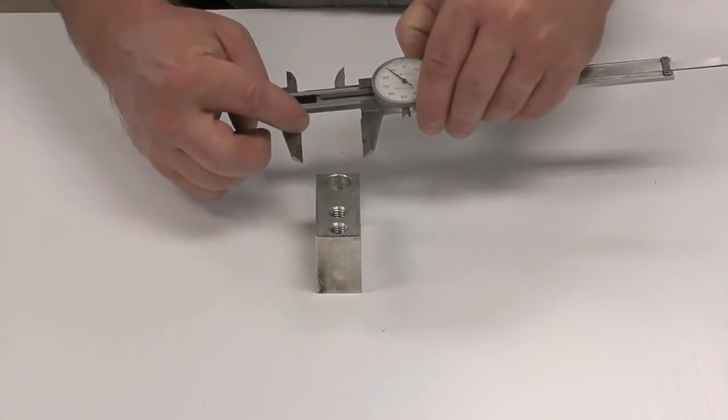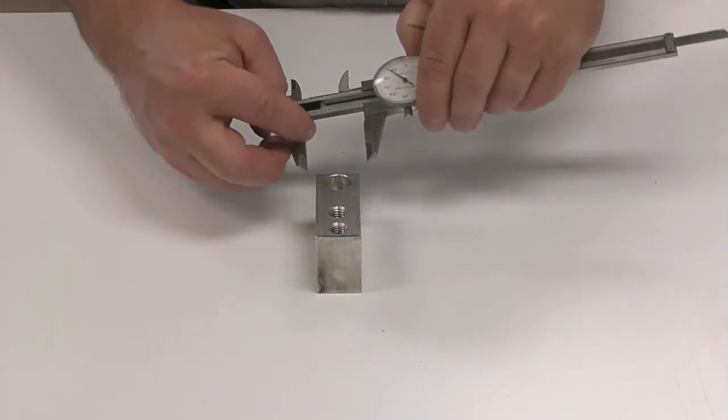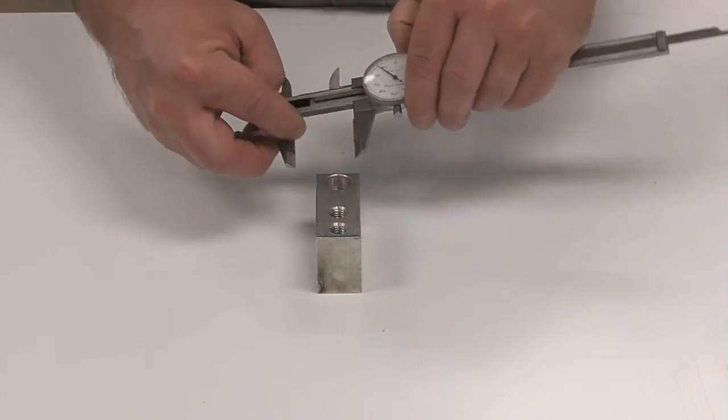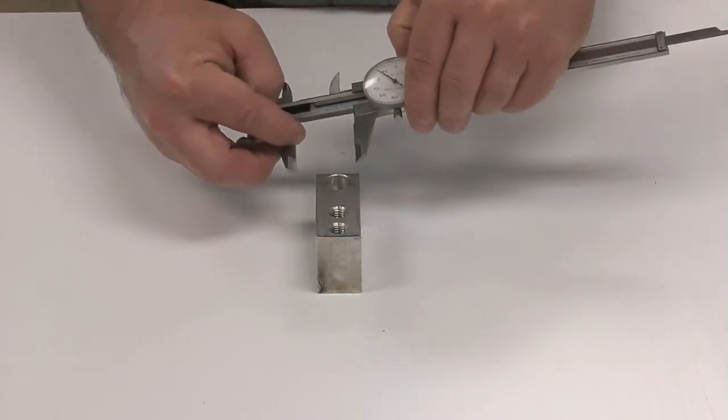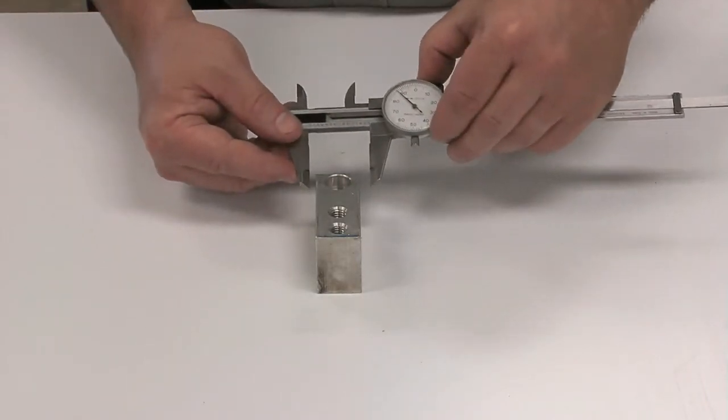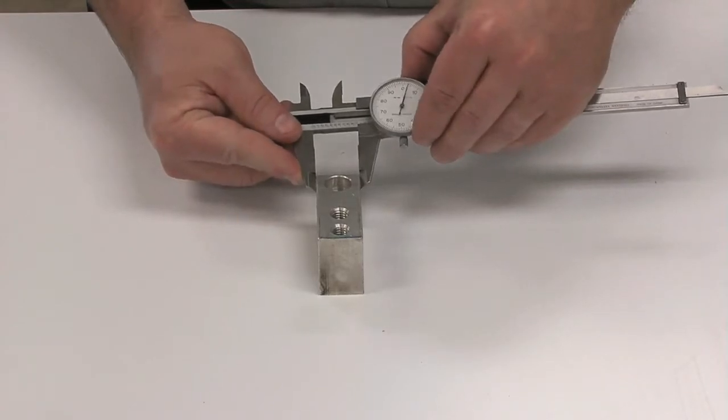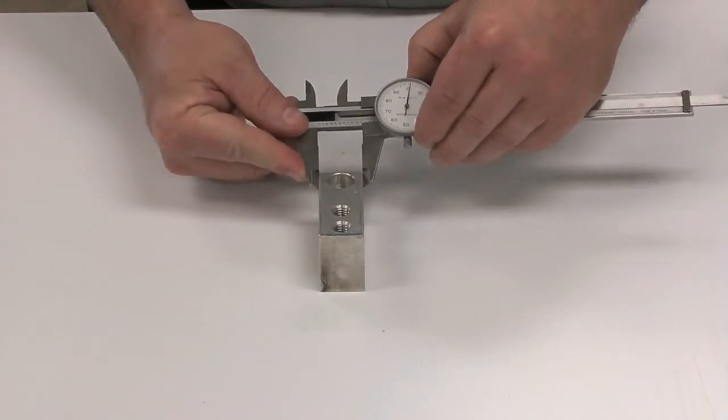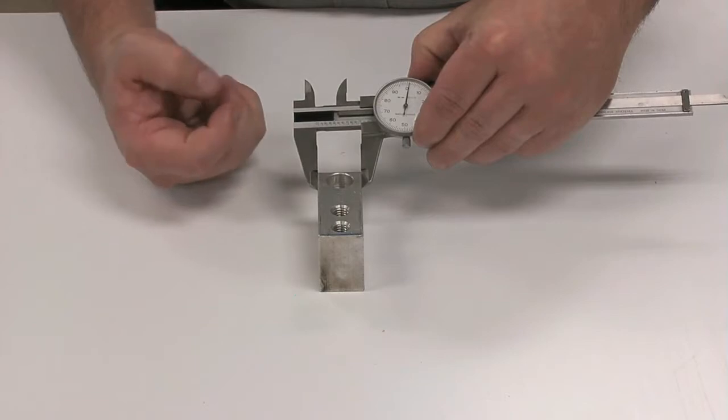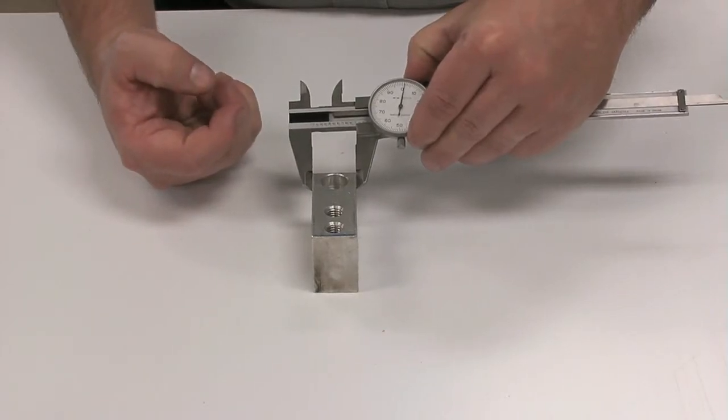We don't want to measure up into the flat area because we can throw the measurements off if the calipers aren't exactly perpendicular to the piece. To make an outside measurement, simply apply light pressure. We can see this is exactly one inch, one thousandth.